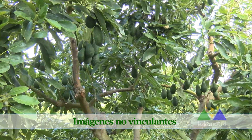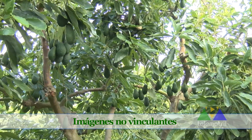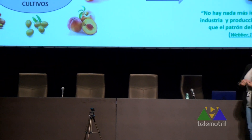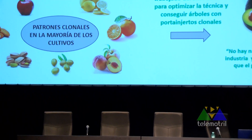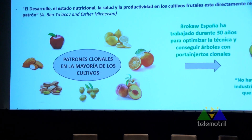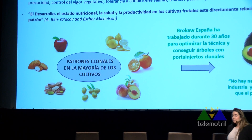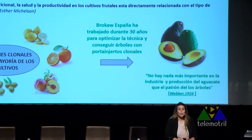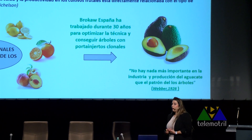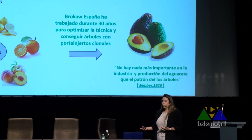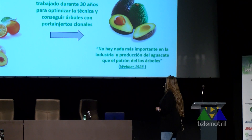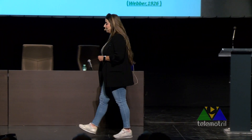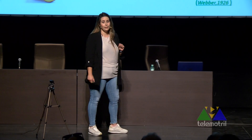¿Por qué es tan importante utilizar patrones clonales? Los patrones clonales se utilizan prácticamente en todos los cultivos, como en manzano, limón, naranjo, olivo. Al final, las raíces, el desarrollo del árbol, la absorción de nutrientes, la formación de hormonas, todo depende de las raíces. Para establecer una nueva plantación, si nos equivocamos en la elección del patrón, probablemente no tengamos éxito en el futuro. Ya dijo Weber en 1926, hace prácticamente 100 años, que no hay nada más importante en la producción del aguacate que el patrón de los árboles.